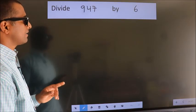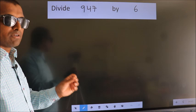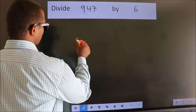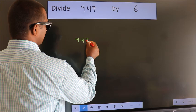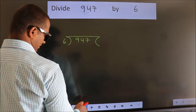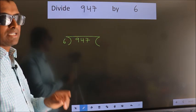Divide 947 by 6. To do this division, we should frame it in this way. 947 here, 6 here. This is your step 1.